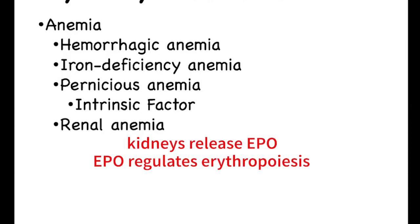Renal anemia — renal refers to kidneys. Recall that the kidneys release the hormone erythropoietin, or EPO. In this case, you have decreased levels of EPO being released, and this is seen in individuals that are undergoing renal failure.